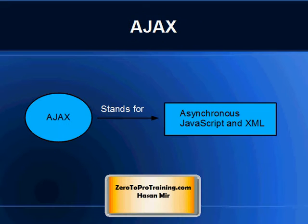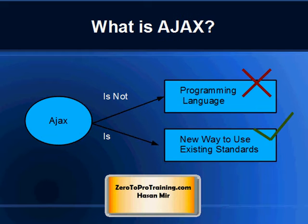Let's start with the meaning of the word Ajax. Ajax stands for Asynchronous JavaScript and XML. It is not a name of a programming language, but it is a new way to use existing standards.